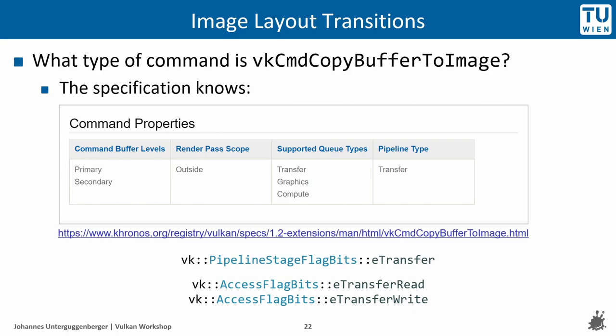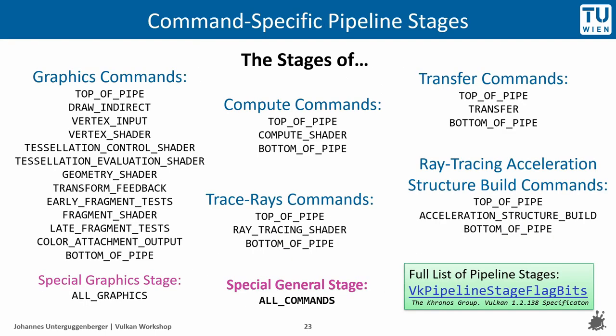Now, how do we figure out what pipeline stage and access mask to use for the copy command? A look in the specification provides the answers. All copy commands, including vkCmdCopyBufferToImage, are classified as transfer commands. Transfer commands only have one pipeline stage that can be used for memory barriers, namely 'transfer.' On this slide we have an overview of different types of commands. Transfer commands are in the top right — they only go through top-of-pipe, transfer, and bottom-of-pipe stages, so they only have one real stage that performs work. Top-of-pipe and bottom-of-pipe cannot be used to express memory dependencies, only execution dependencies. For more details, please watch the introduction to Vulkan lecture linked on the workshop's GitHub pages.